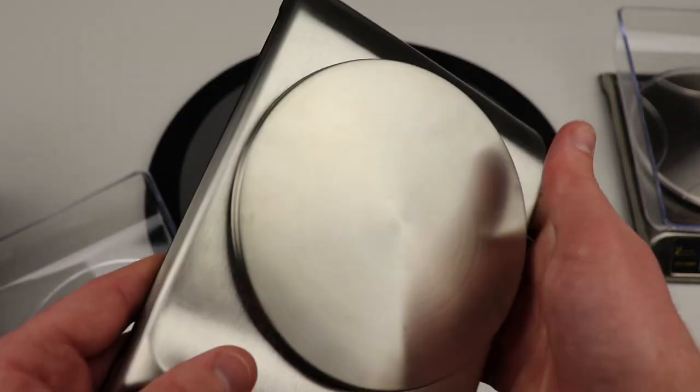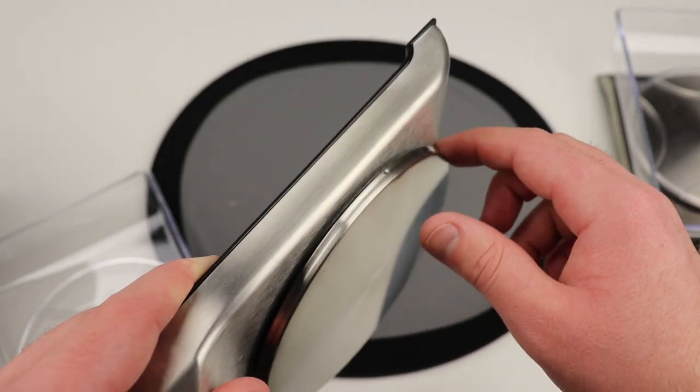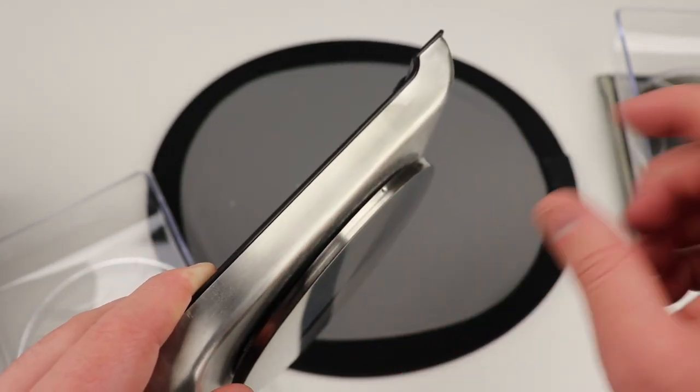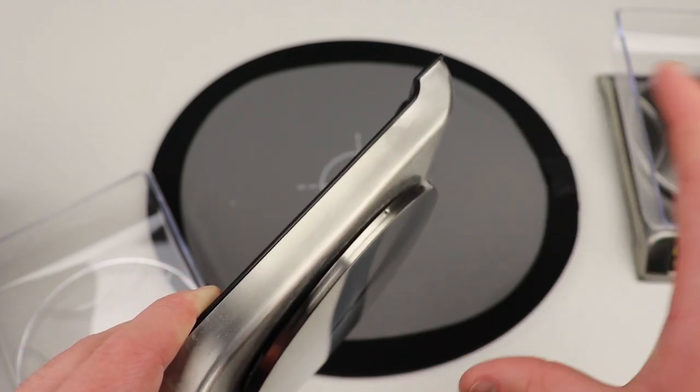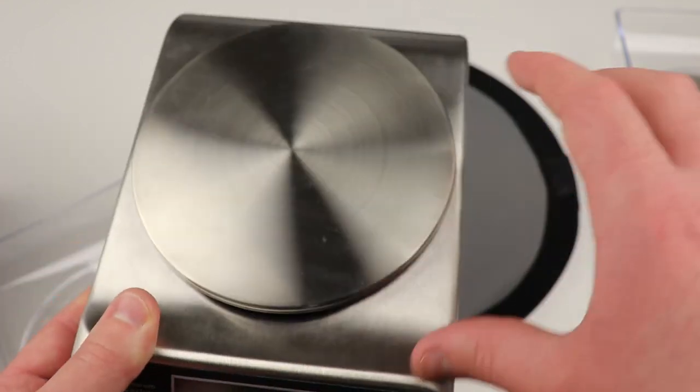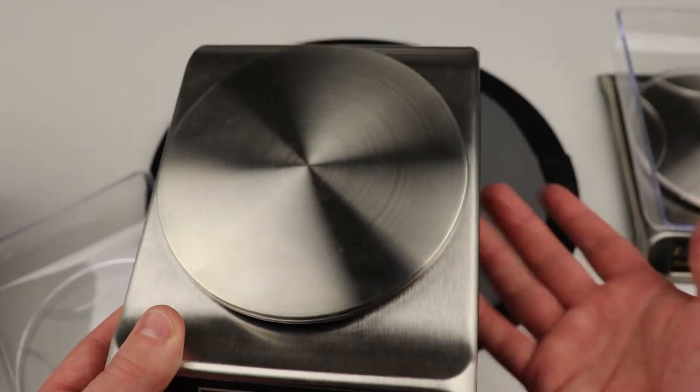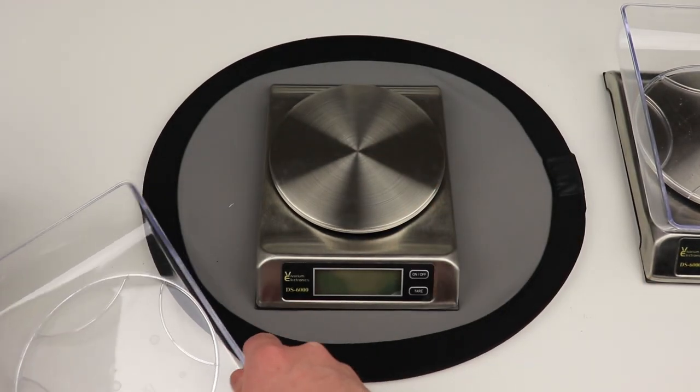One unfortunate thing about most of these scale designs is if you get a bunch of particles like bedding, especially if it's like a finely ground coconut substrate, it can actually go in this crack and start to mess with the internal components of the scale.